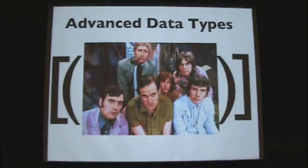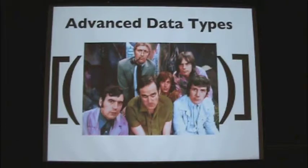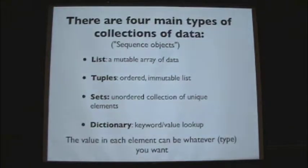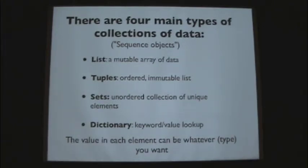We're going to talk about some advanced data types beyond just string equals spam. We'll be talking about four built-in types: list, tuple, sets, and dictionaries. The way to think about all of these is that they're essentially sequences of objects. Some of them are changeable, some of them are not changeable or immutable.